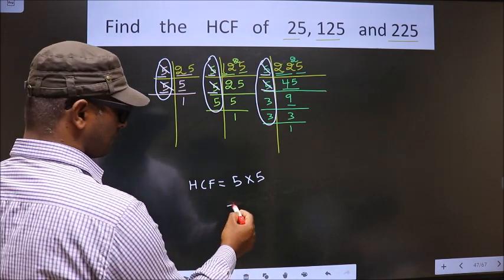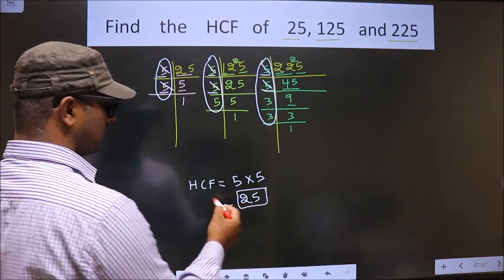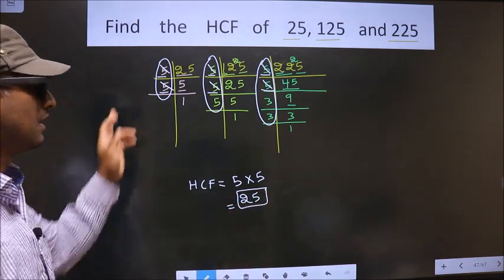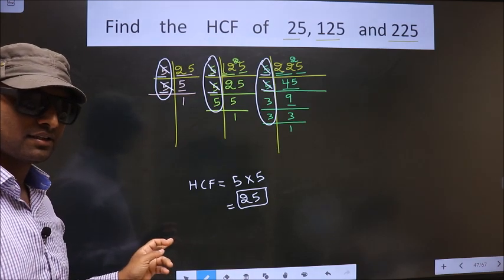That is 5 into 5, 25. This is our HCF. Am I clear? Is it 5 here? No need to check.